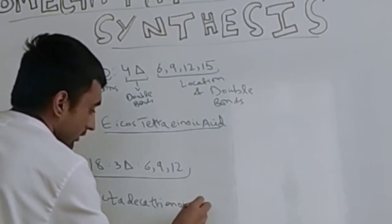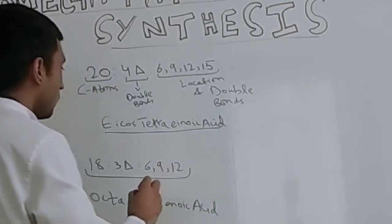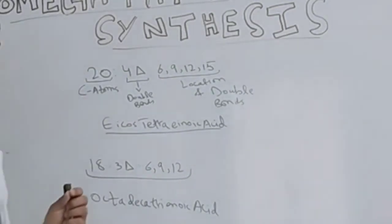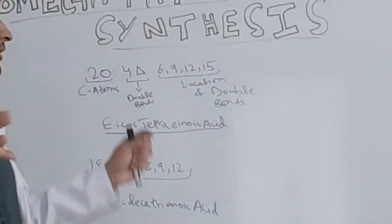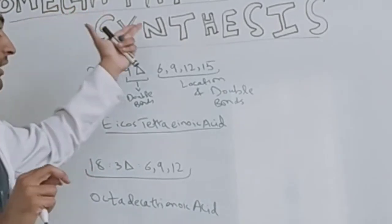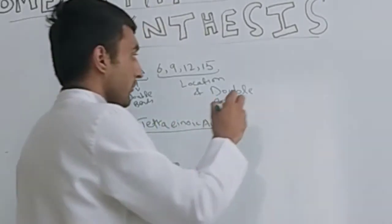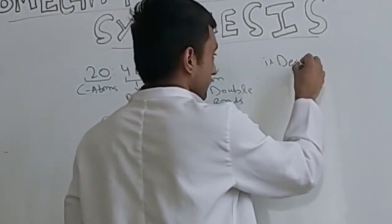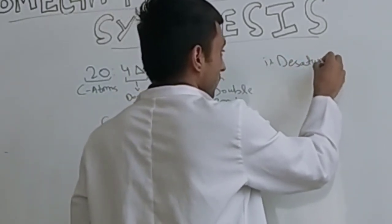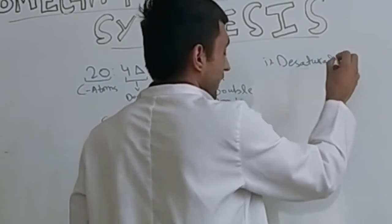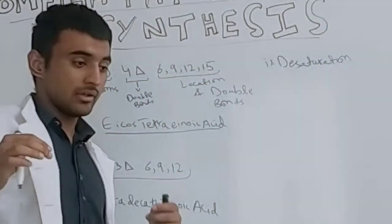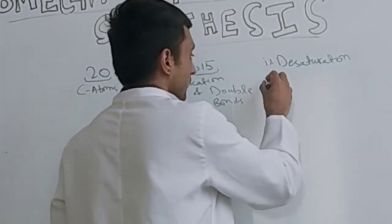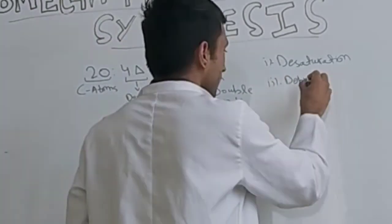So in this way we name the double bonds. Now you must need to remember three terms while learning omega fatty acid synthesis: desaturation, dehydration, and elongation. In desaturation, any element is lost and double bond is added.